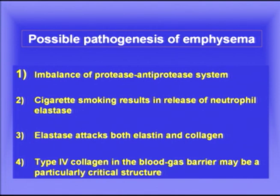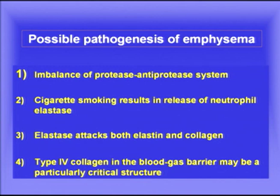This disease suggests a possible pathogenesis of emphysema generally. The disease is almost certainly caused by an imbalance between the protease (trypsin) and the anti-protease (antitrypsin), and it's tempting to think this may be true of other types of emphysema as well. We know that cigarette smoking results in the release of neutrophil elastase — neutrophils contain large amounts of elastase because they use the enzyme to break down bacteria. Elastase is a misleading term because it not only attacks elastin but also cleaves collagen, so it acts as a collagenase as well.